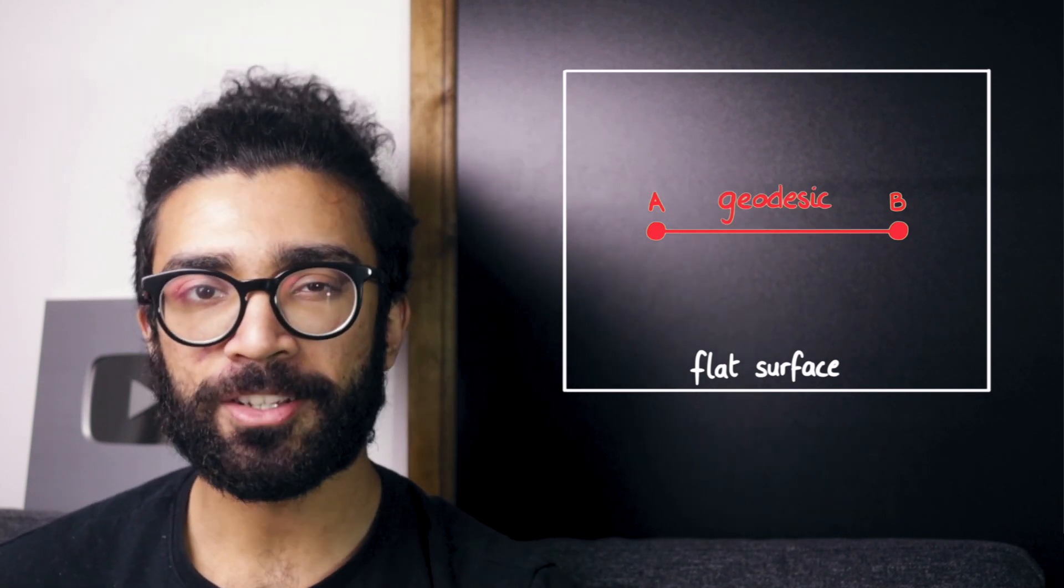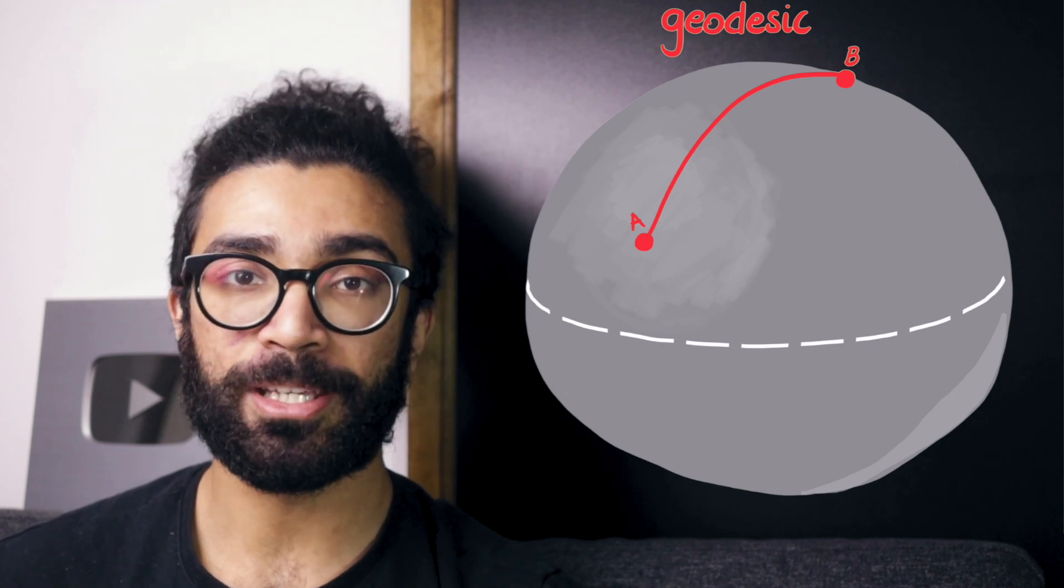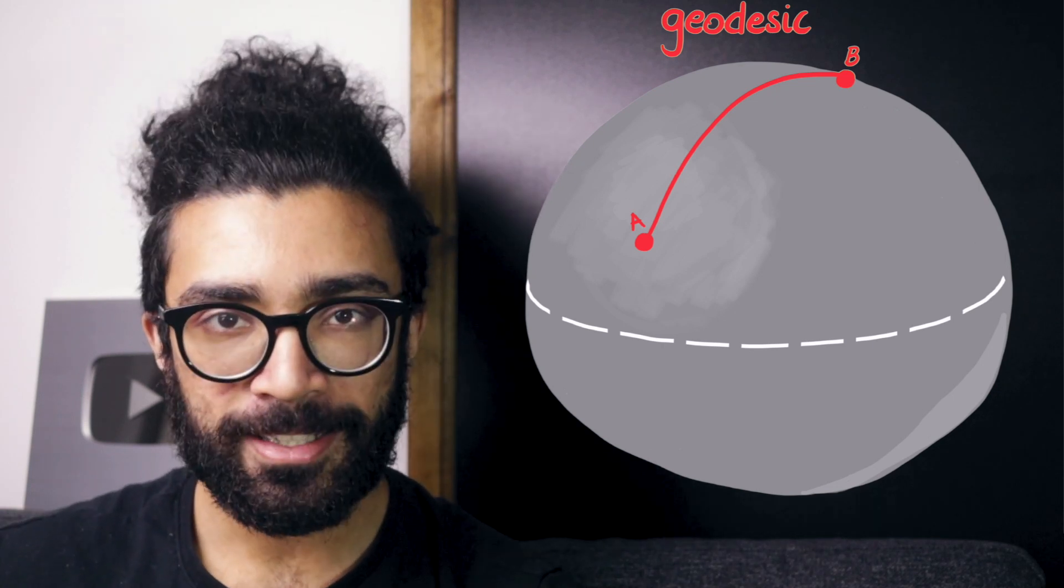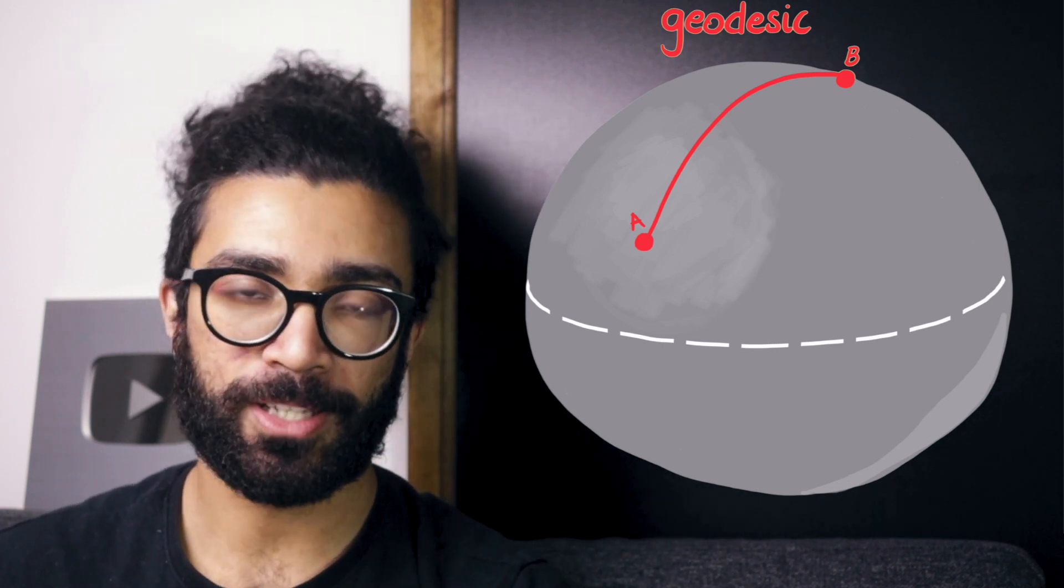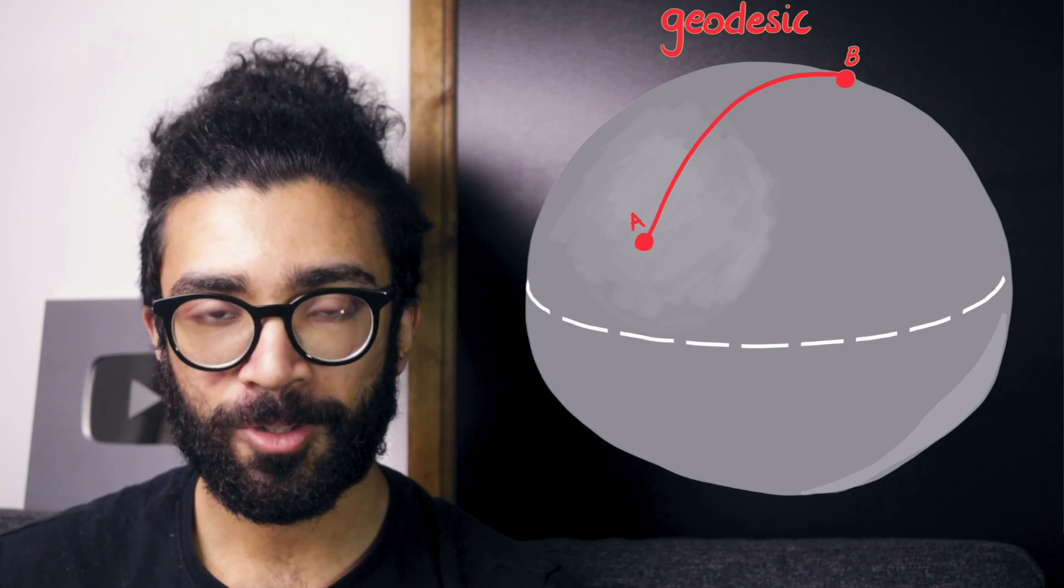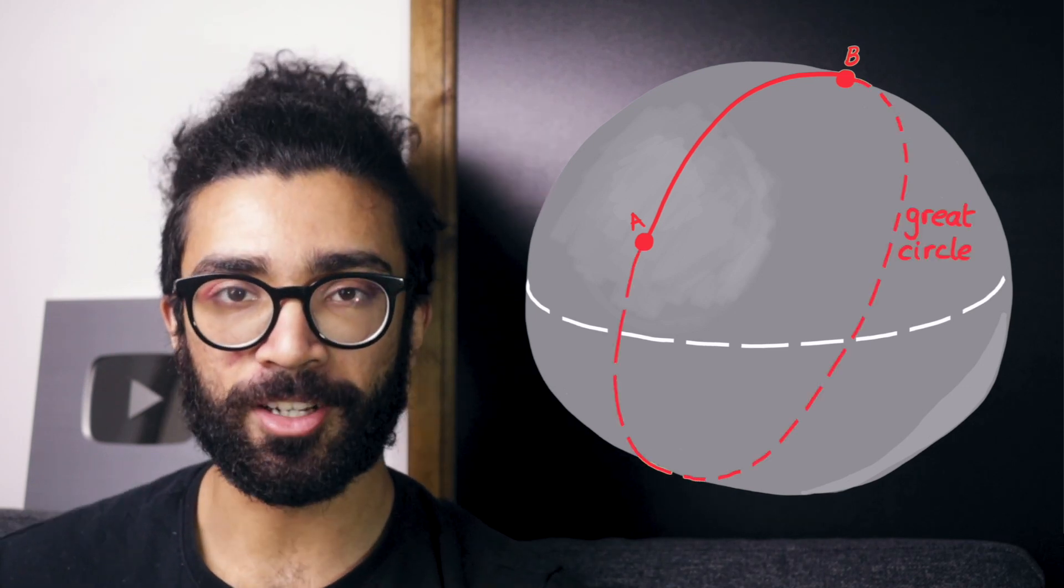But if we continue to think about our spherical surface with points A and B on this sphere, the geodesic between any two points, say points A and B, is always going to be a section of what is known as a great circle.